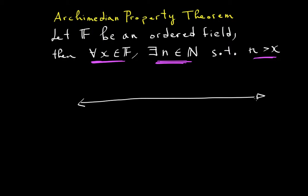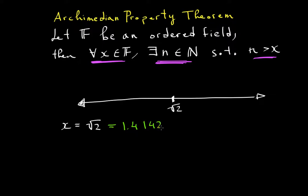So if I choose x to be the square root of two, let's put this somewhere here — square root of two is approximately 1.4142... A natural number that is greater than this x will be 2. So there you go, I found 2, which is greater than the square root of two.